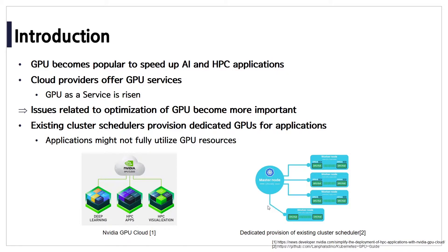GPU has become more popular to speed up compute-intensive applications such as AI and HPC applications. For this reason, several cloud providers offer GPU services, which are called GPU-as-a-Service. NVIDIA also provides GPUs for HPC and deep learning workloads, so issues related to optimization of GPU have become more important than ever.